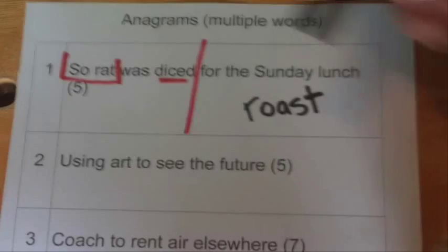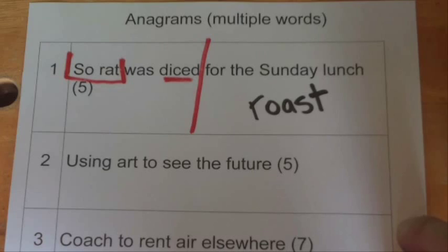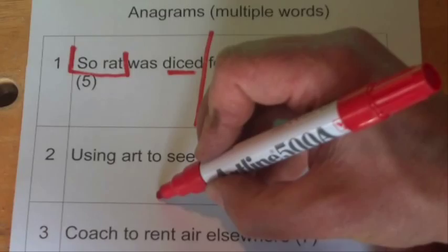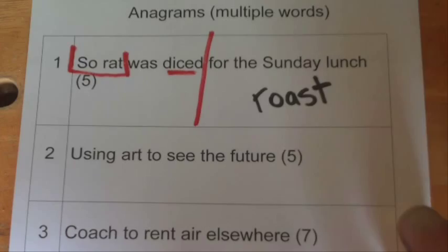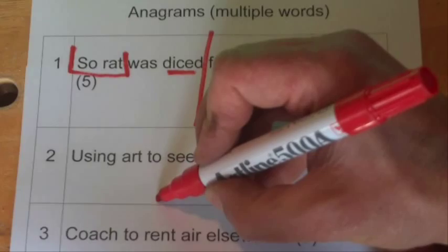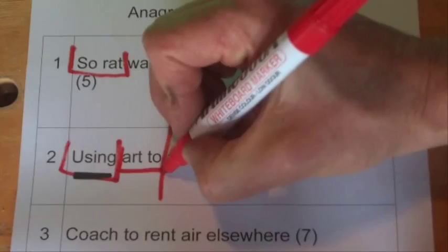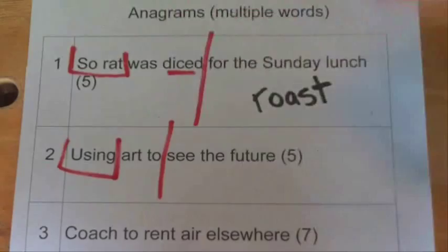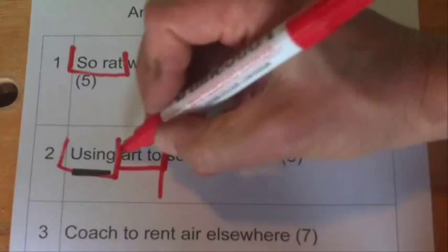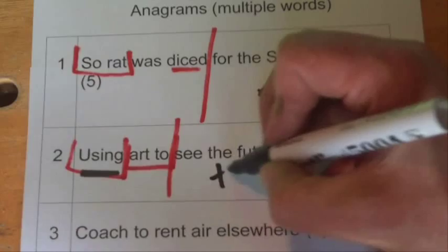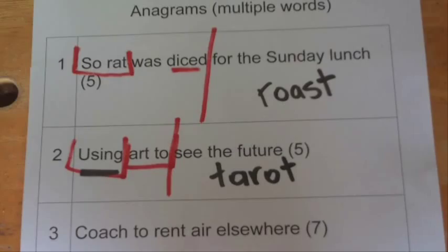Now we move on to the next clue: 'using art to see the future.' We split the two halves — 'see the future' and 'using art to' — where 'using' is another one of those anagram indicator words. We take the letters from 'art to' — a-r-t-t-o — rearrange them, and we come up with the word TAROT. Tarot cards are used to see the future, and the letters from 'art to' make the word TAROT.